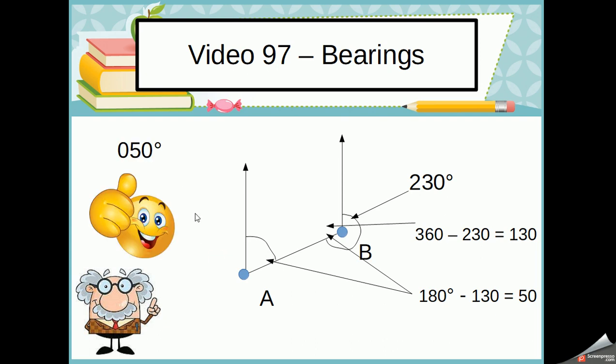However, in bearings we've always got to have three numbers. So if you've got a number that is below 100, you have to put a 0 before it. In this case the bearing is 050.